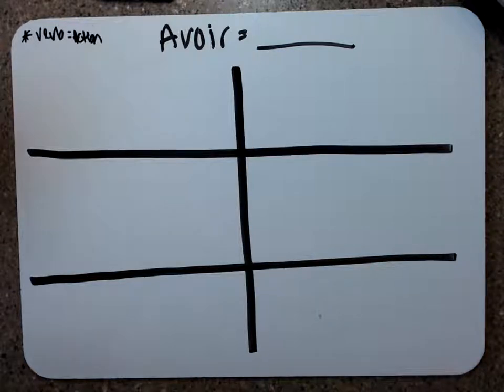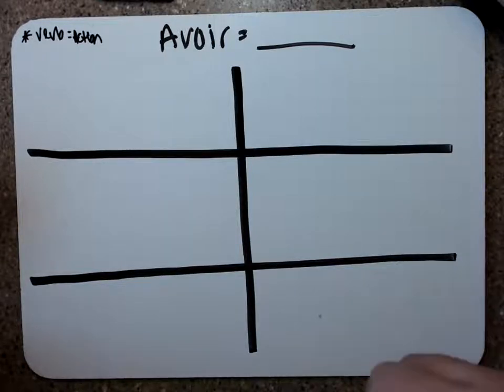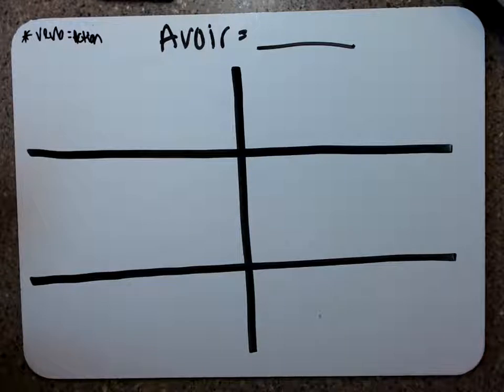A little bit of background info before we get started. Just like in English, French has different forms of a verb for each subject. So like in English, if we say I'm running, you're running, he's running, she's running, they're all different, or they might be the same, but some of them are different. For example, the verb to be in English: I am, you are, he or she is. And just like that in English, it happens in French. Except in French, almost every verb has a different form for each subject.